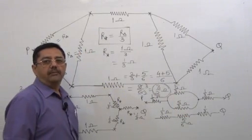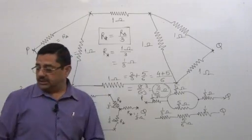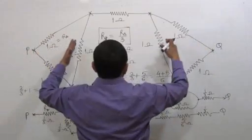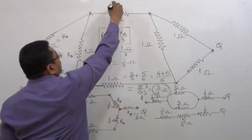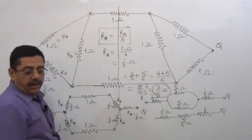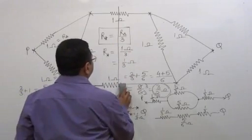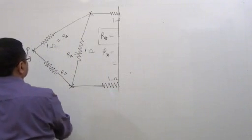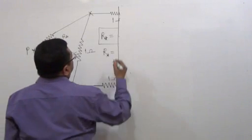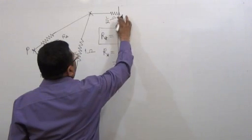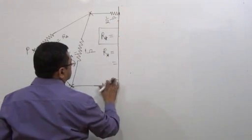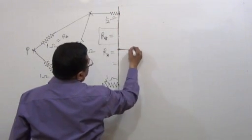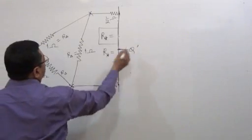Now, one shortcut: if this is a symmetrical combination — two resistances, two resistances, one, one, one, one — we use a shortcut. From the center wire, we cut it. After cutting, find half the resistance, then double it. What happens: this wire is cut, so this becomes half ohm — half ohm. This is also cut at the center, so this is also half ohm. And this is a conducting wire, with this point as Q dash.